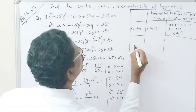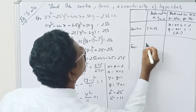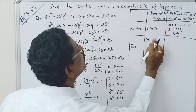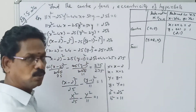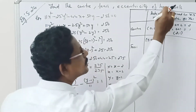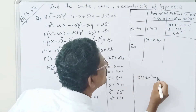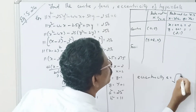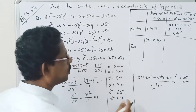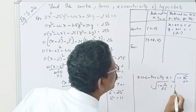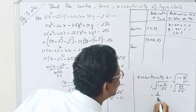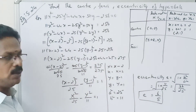For the foci, we need the eccentricity e. The formula is e = √(1 + b²/a²) = √(1 + 11/25) = √(36/25) = 6/5.